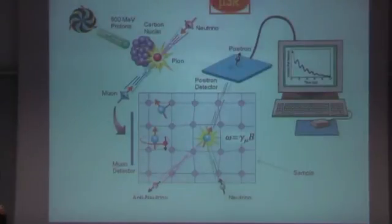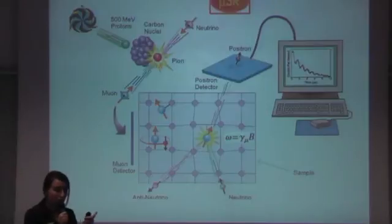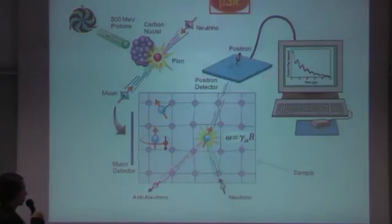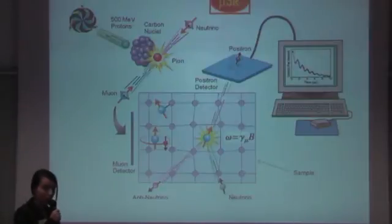Here is a schematic. We have the cyclotron, we accelerate protons, and from pion decay we obtain the muons. The muons are implanted in the sample you want to study. If you want to probe local magnetic fields, the spin will start precessing around the local magnetic field, and you look at the Larmor frequency, which is proportional to the local magnetic field you want to detect. Then you look at the positrons from the decay of the muon, and that's how you extract information on the local magnetic field.